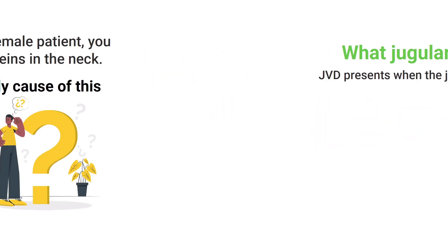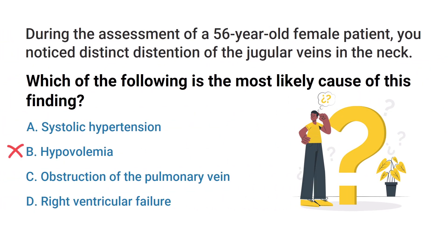This means that we can rule out B right away, and none of the other answer choices really support what we know about jugular venous distension either, which tells us that the correct answer has to be D — right ventricular failure.